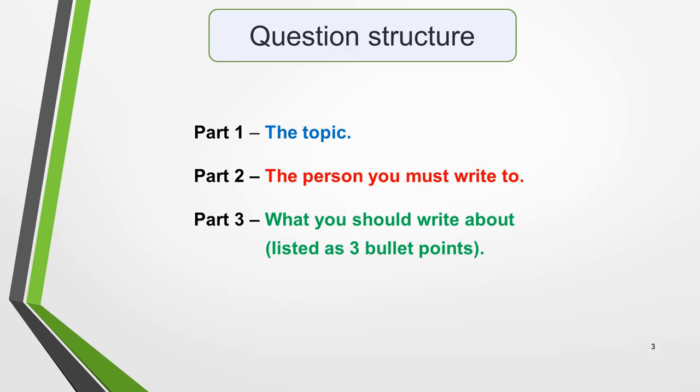First, the structure of the question. All questions for IELTS letters have the same structure — they're made up of three parts. Part one is the topic. Part two, the person you must write to. And part three, what you should write about, which is listed as three bullet points.